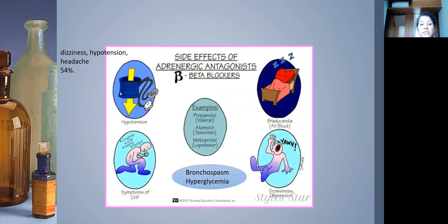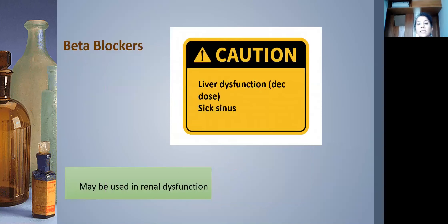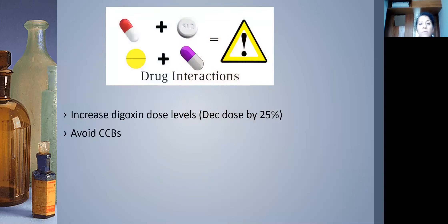Symptoms of heart failure can be exacerbated by beta blockers; watch for this. Non-selective beta blockers can cause bronchospasm. Bradycardia and AV block of varying degrees can occur — always check baseline heart rate and ECG and repeat as needed. Neurological side effects include drowsiness and depression. Cautions: liver dysfunction can affect beta blocker metabolism and may require dose reduction; they are safe in renal dysfunction; be careful in sick sinus syndrome or bradycardia.